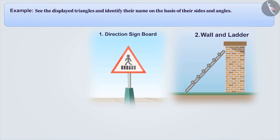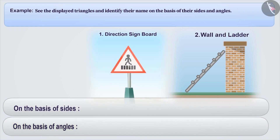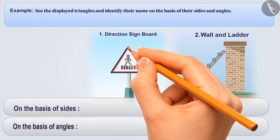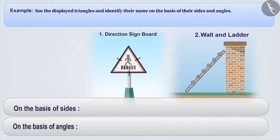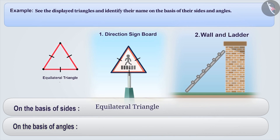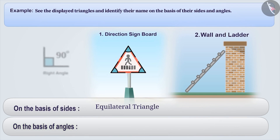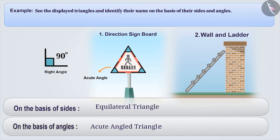First figure: a direction signboard. In this figure, all three sides appear equal. Therefore, on the basis of sides, we can say that this is an equilateral triangle. Similarly, here we can see that all angles are smaller than a right angle, which means they are appearing to be acute angles. Therefore, on the basis of angles, we can say that this is an acute angle triangle.